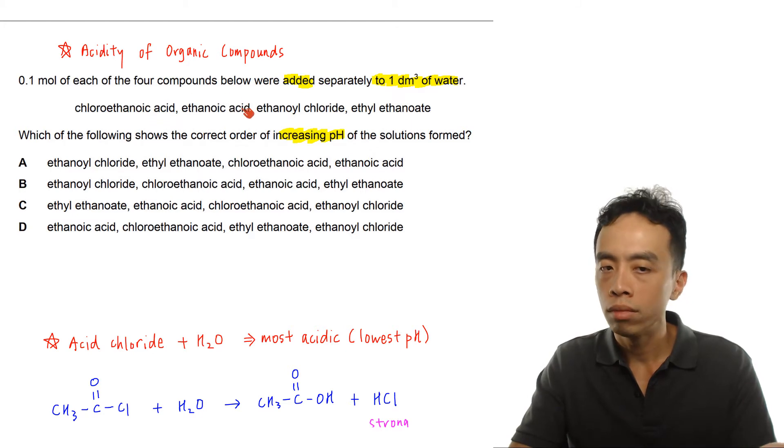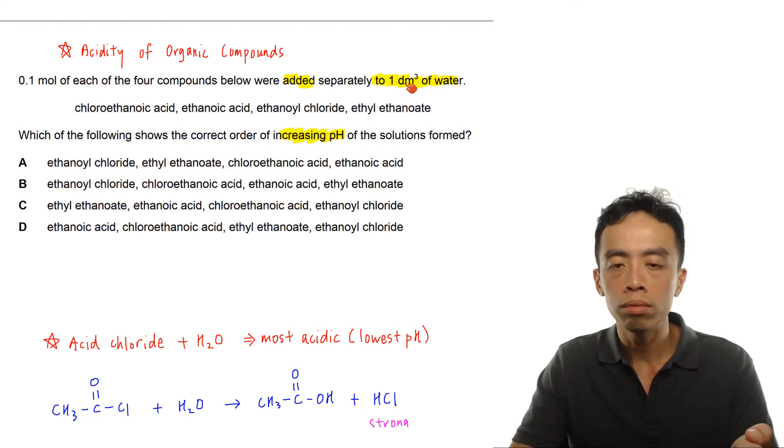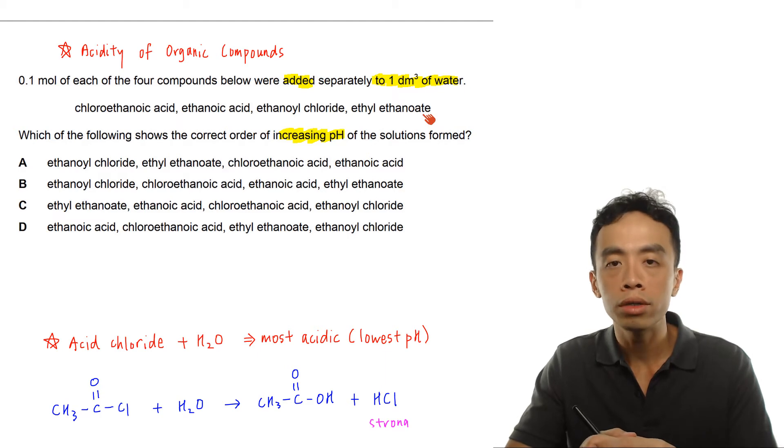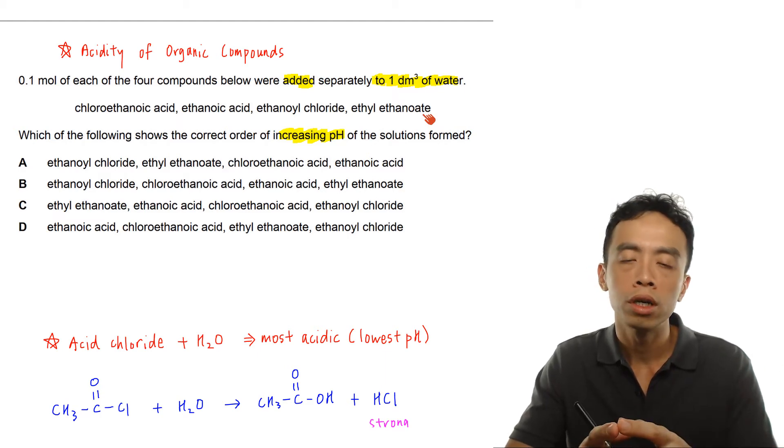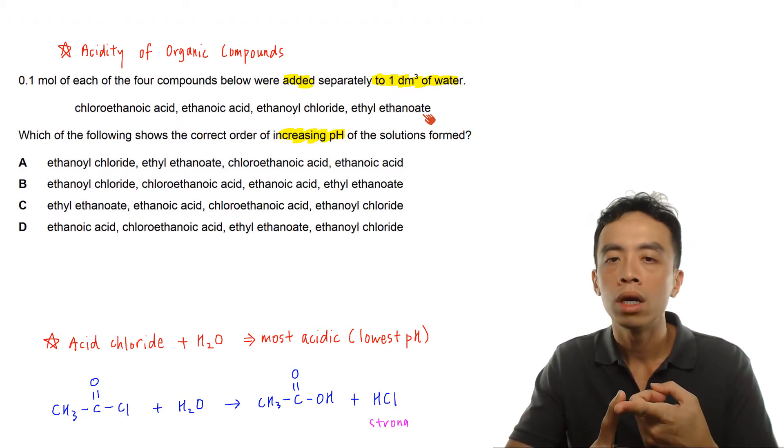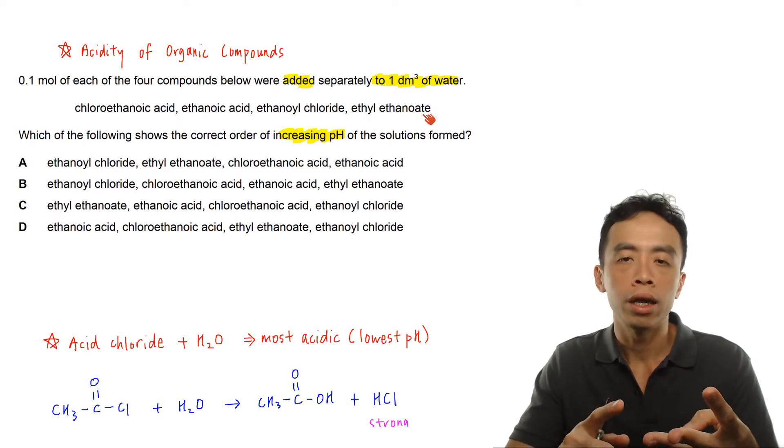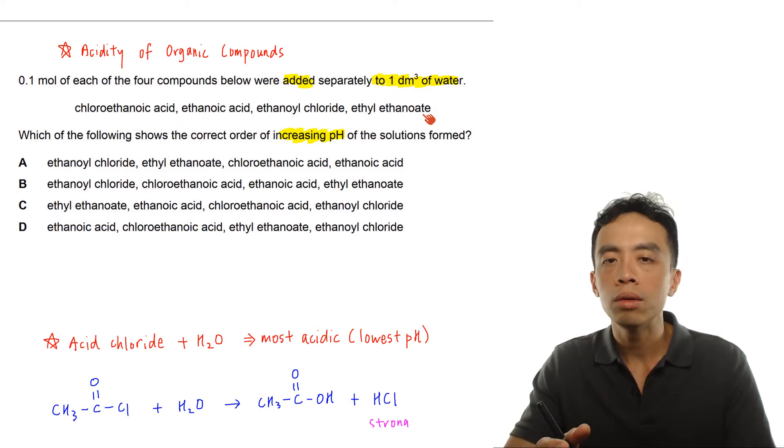If I look at these four compounds, chloroethanoic acid and ethanoic acid, both are carboxylic acids. Ethanoyl chloride is an acid chloride, and ethyl ethanoate is an ester. So in this case we have three different functional groups to consider: acid chlorides, carboxylic acids, and esters. If you're familiar with the acidity of organic compounds, then this question is actually pretty straightforward.